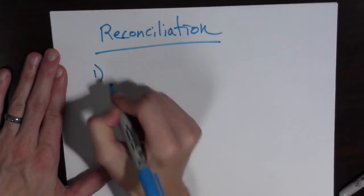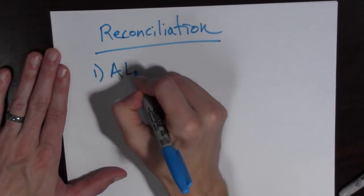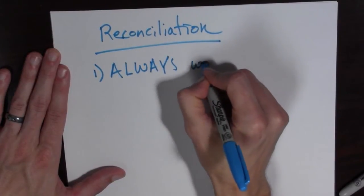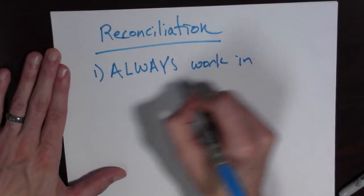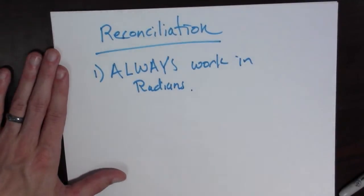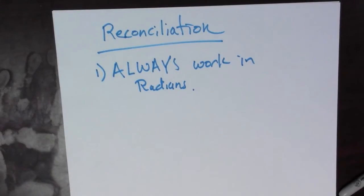Well, the first way is the easiest way. It is always work in radians. That's the first way to reconcile what's going on here.